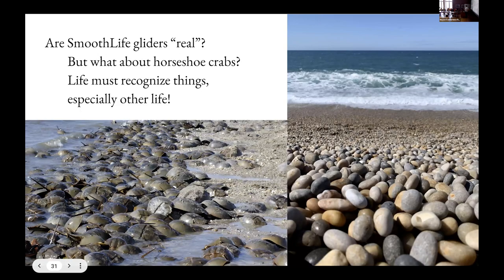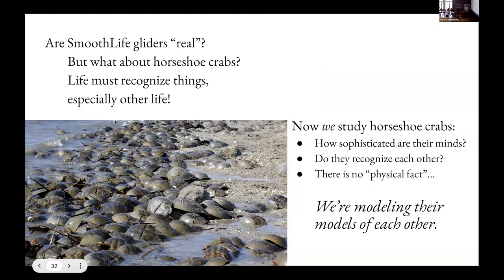But this gets more interesting when you have life forms. So what about horseshoe crabs on the beach? Now, horseshoe crabs don't survive unless they recognize other horseshoe crabs because they need to do that in order to mate. So now we can ask a really interesting question, which is like, well, there's clearly a capability here in these horseshoe crabs of recognizing other horseshoe crabs. Without that, they wouldn't work. The life wouldn't happen.